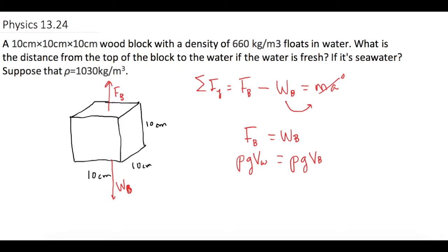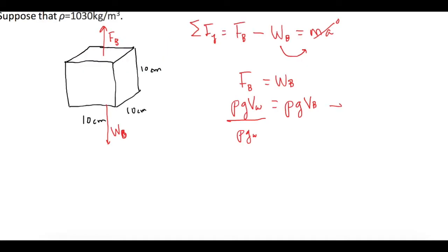Now we want to solve for height. How high is the water up the block? Let's isolate the volumes. If we divide over ρ times gravity for the water, this gives us ρ times gravity times the volume of the block divided by ρ times gravity of the water. And this is all equal to the volume of the water displaced. The volume we know is equal to length times width times height, and there's the height that we're going to solve for. That is equal to ρ g volume of the total block divided by ρ g of the water.